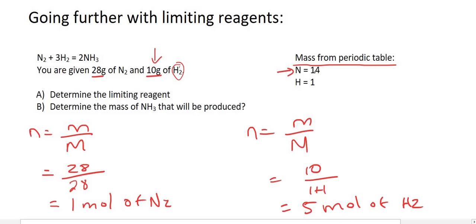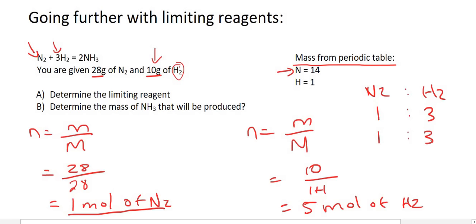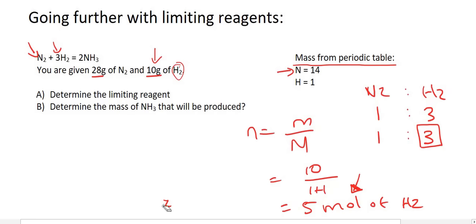So which one is the limiting reagent? We write out nitrogen and hydrogen. The molar ratio from the equation is 1 to 3, meaning for every one mole of nitrogen we need three moles of hydrogen. We have five moles of hydrogen — more than enough. So nitrogen is going to be the limiting reagent.